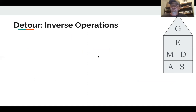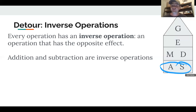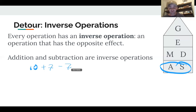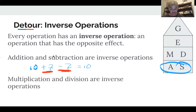Let's do a quick detour and talk about something called inverse operations. Every operation has an inverse operation, which is an operation that has the opposite effect. Addition and subtraction are inverse operations. For example: 10 plus 7 minus 7 — you go up to 17 and then back to 10. Adding 7 and subtracting 7 undo each other.